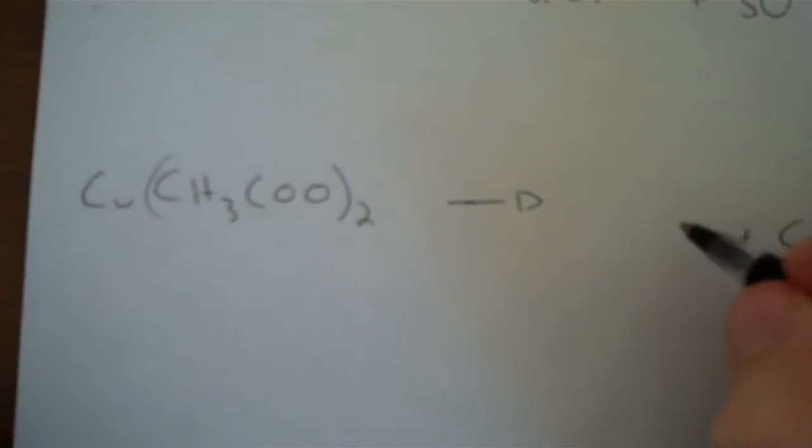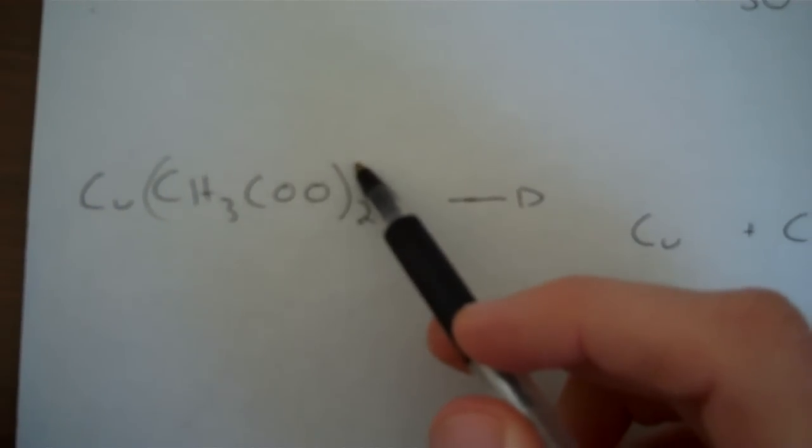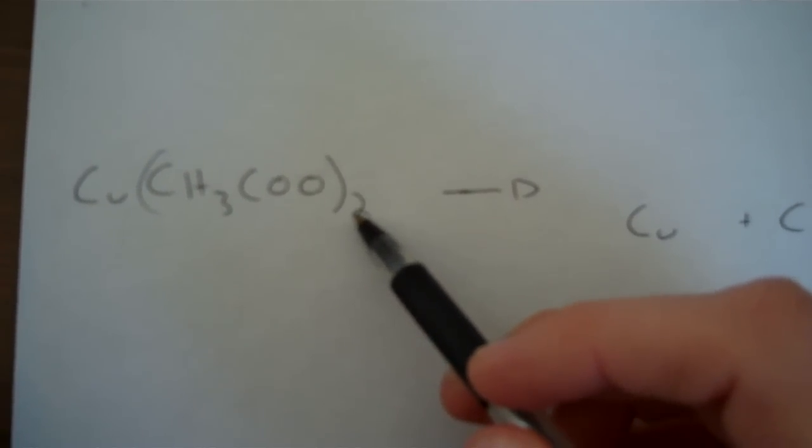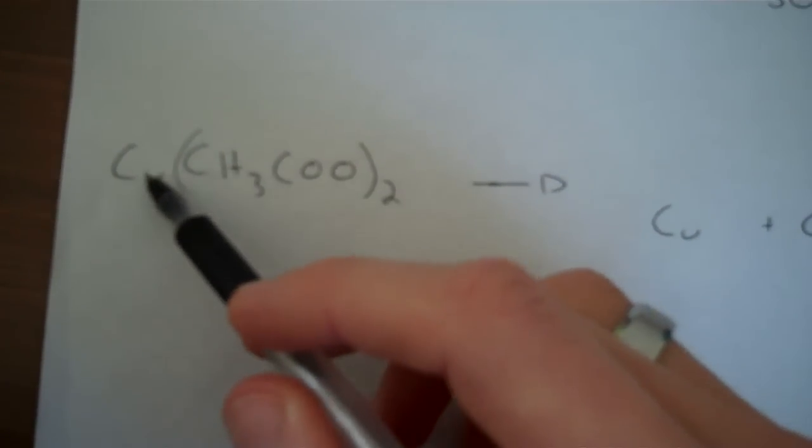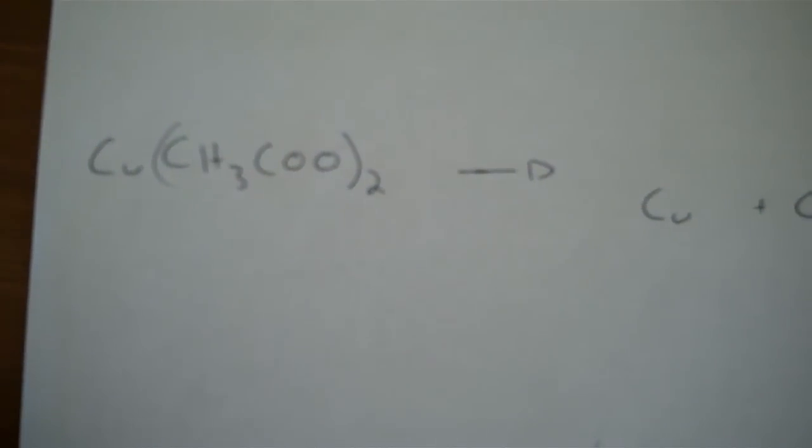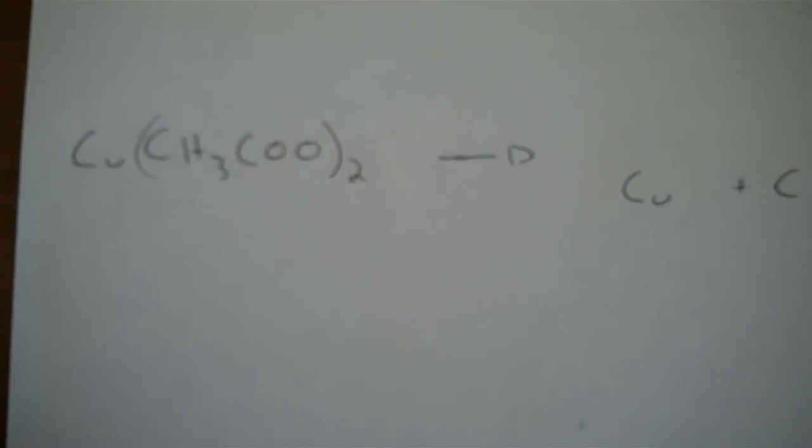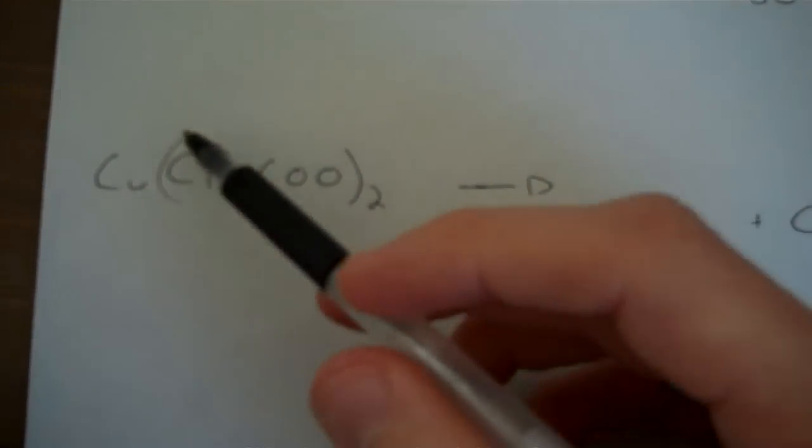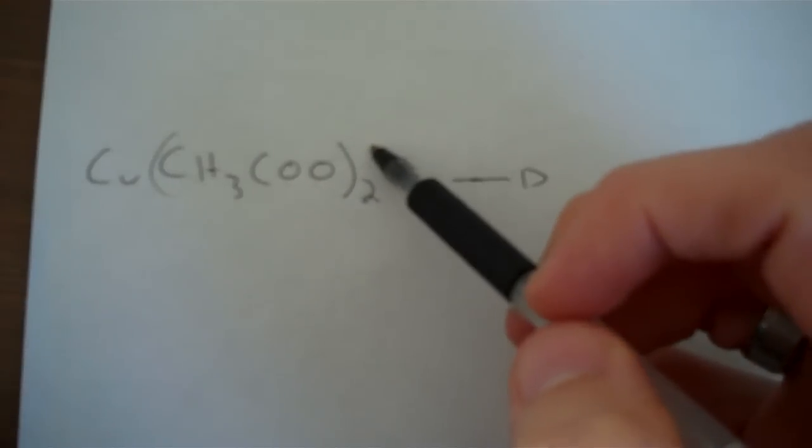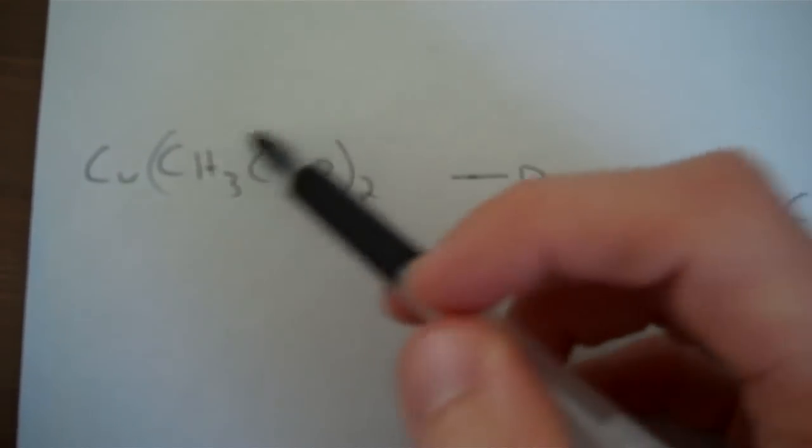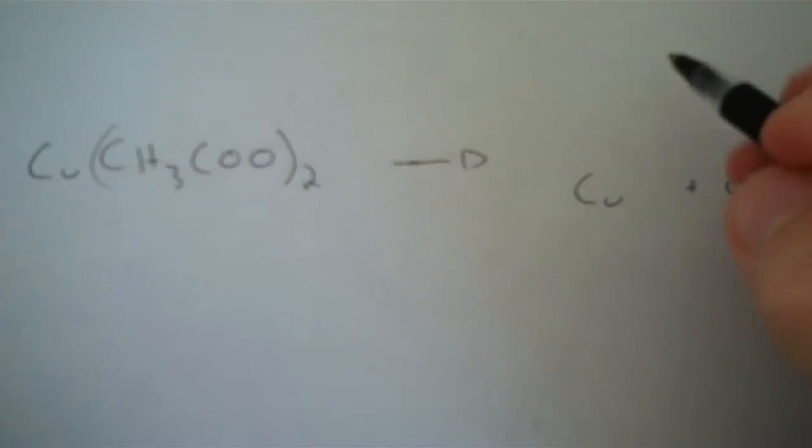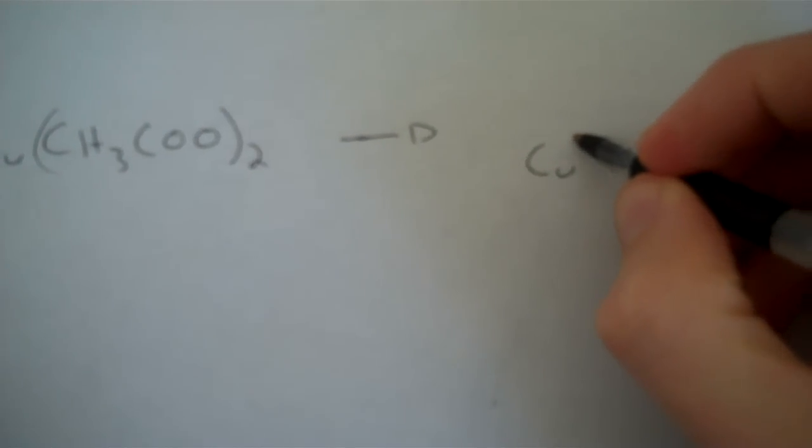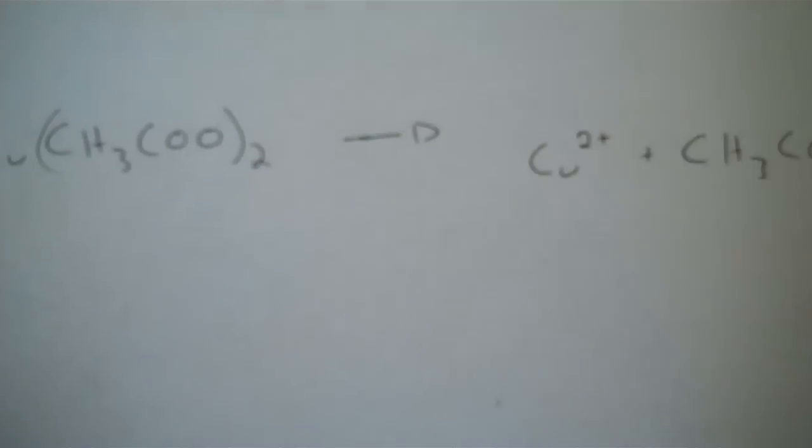And for the copper ion, if this is a minus 1 charge, and there's 2 of them, and the charges balance out, then I know that this must be copper 2 ion, or cupric, because it has a plus 2. This has a minus 1, so the two charges cancel each other out. So I know that this is Cu2+ the cupric ion.